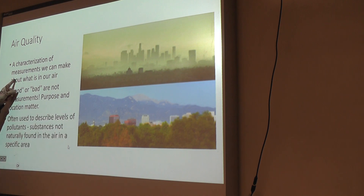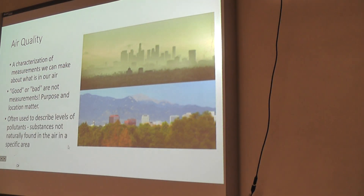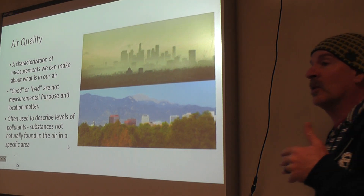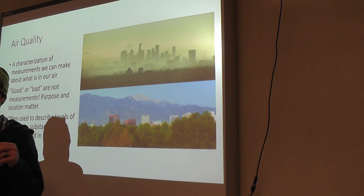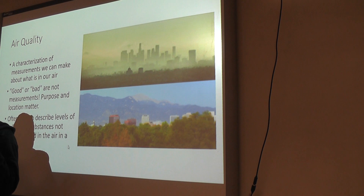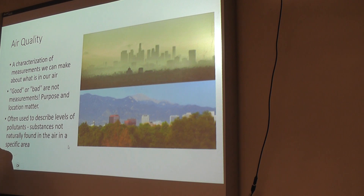One of the sets of measurements we can make about air quality has to do with pollutants. Pollutants are things we find in air that wouldn't be there in the absence of human activities. Usually we think of smoke as terrible, but not necessarily. There are places in the world that historically, long before human beings, had frequent fires — areas with frequent thunderstorms and humid climates. Smoke is very common in those areas naturally, so that's not a pollutant. But if human actions cause way more smoke than there normally would be, then we might categorize that smoke as a pollutant.